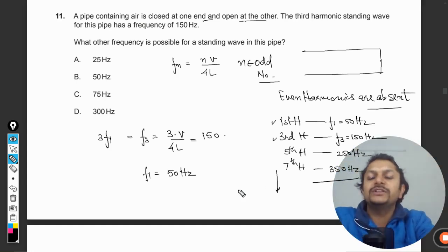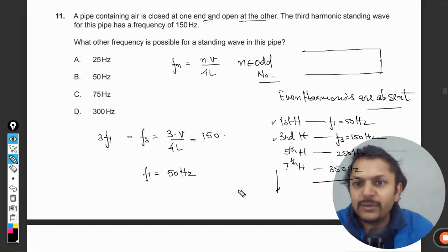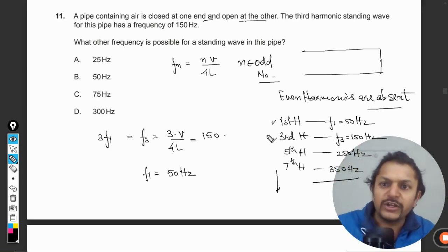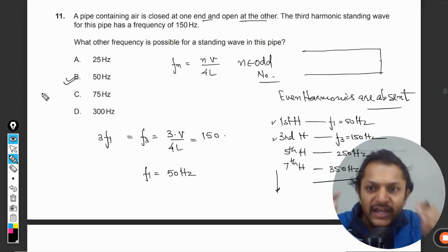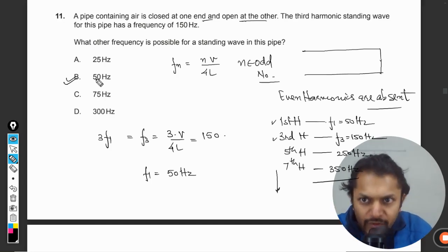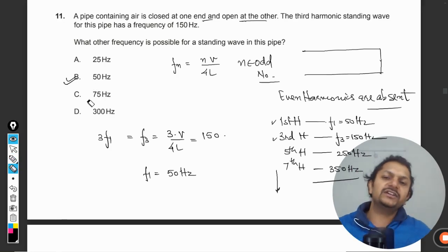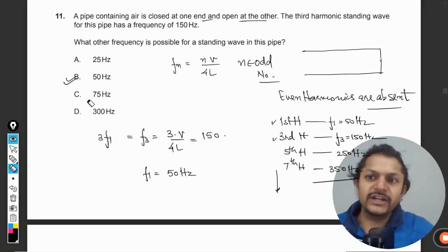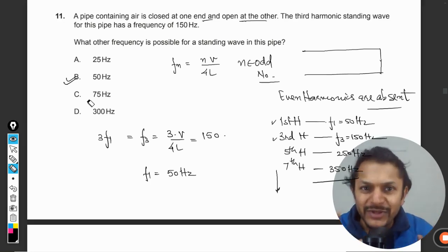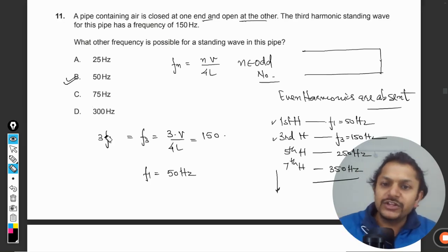These are all the possible frequencies for the standing wave in this pipe. Now out of all these possible values, only 50 hertz is given in our options. Other options are not there. 250 will be correct answer, 350 would be the correct answer, but in our case 50 hertz is given, so according to this the answer for this question will be B.